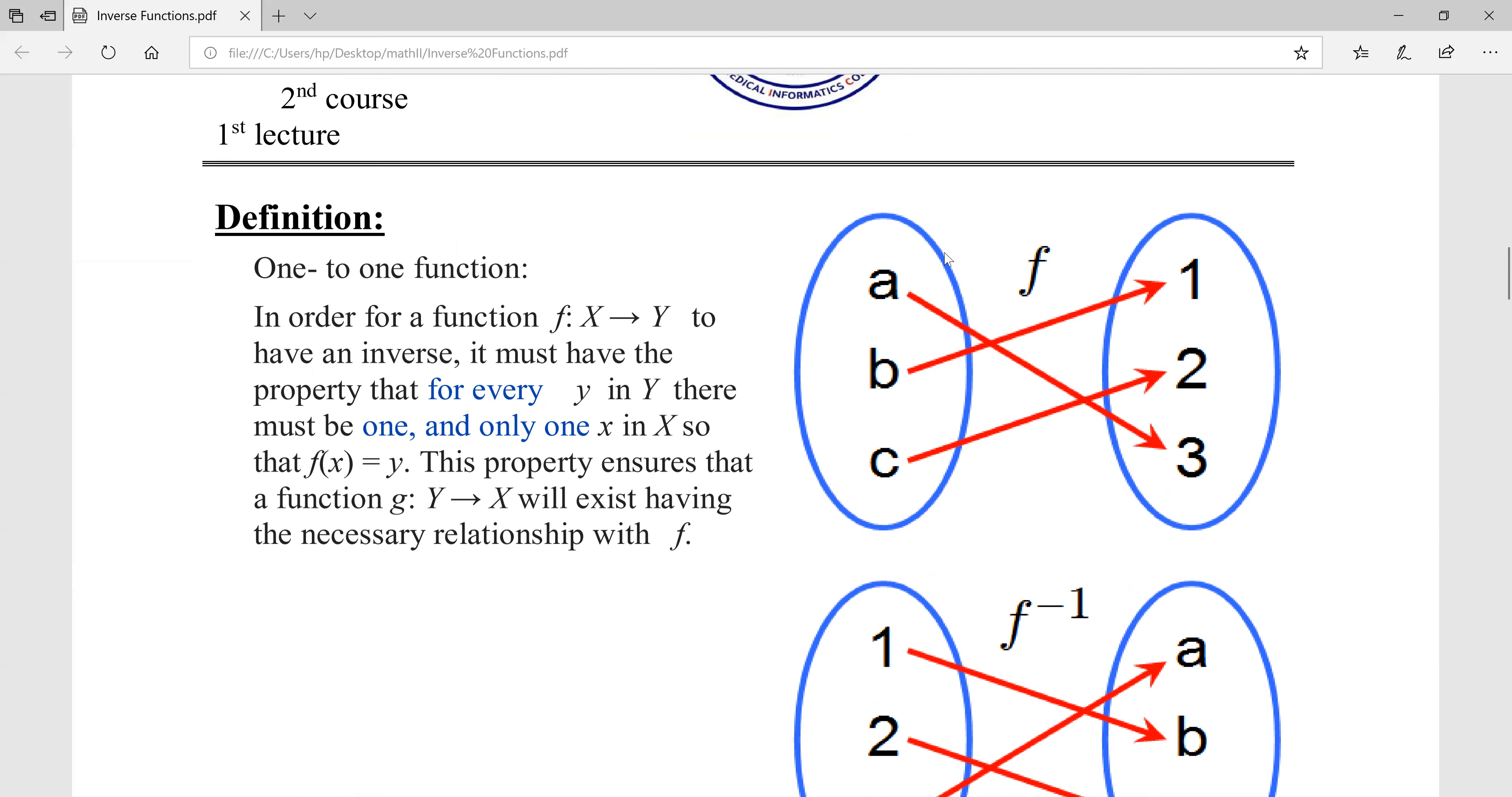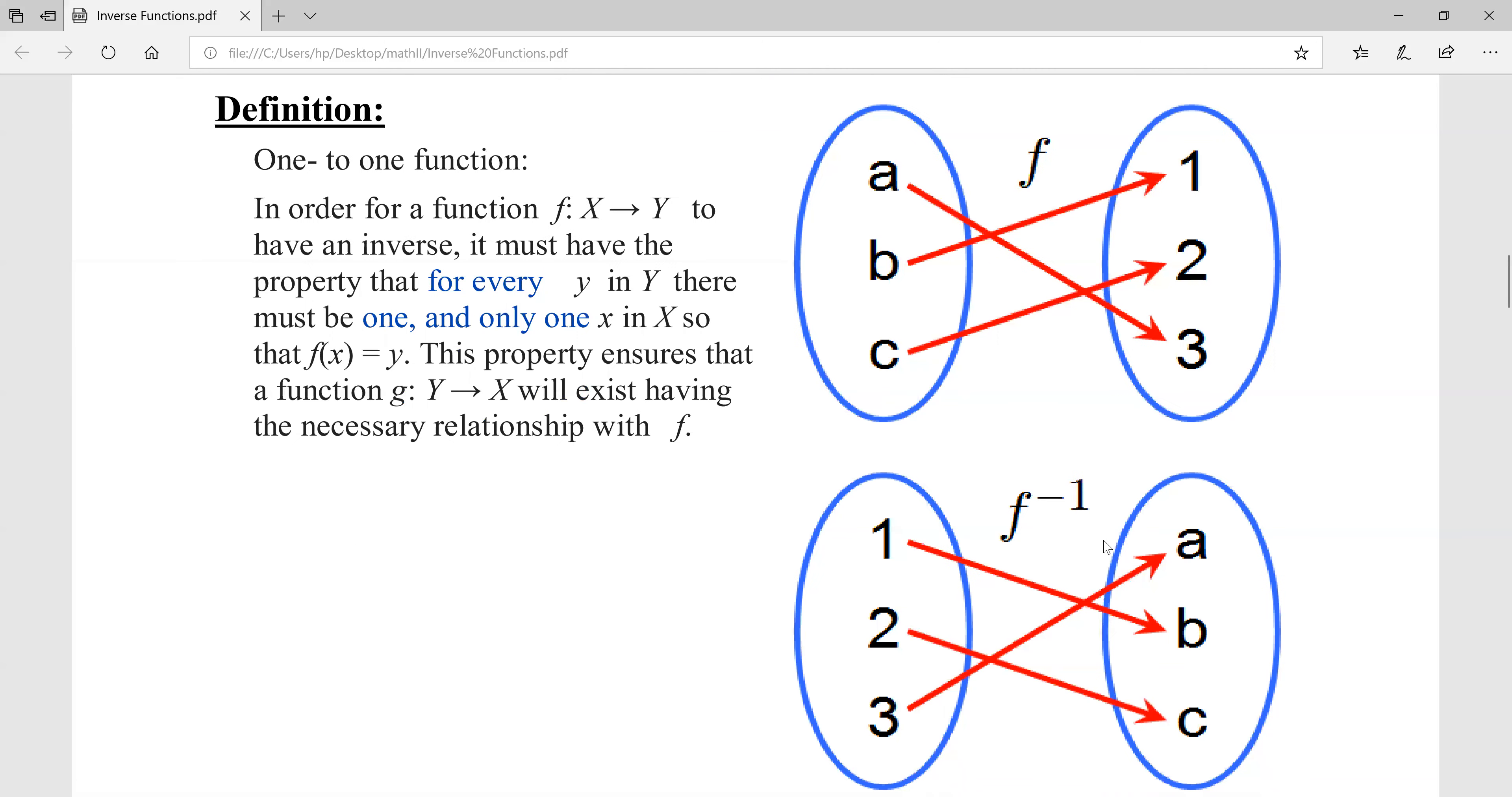F is a function from X to Y, so the inverse is a function from Y to X. For the function to be one-to-one, all different values in X must map to different values in Y.